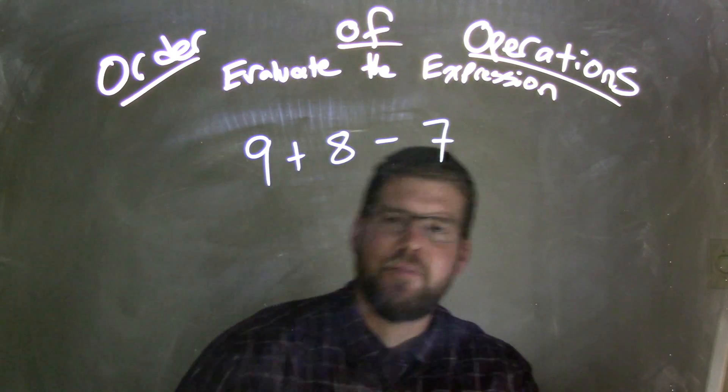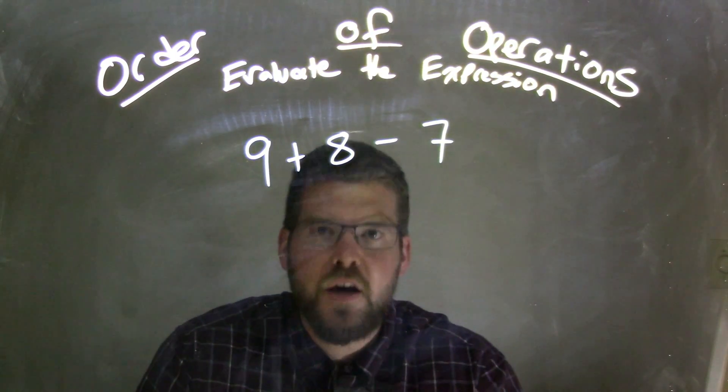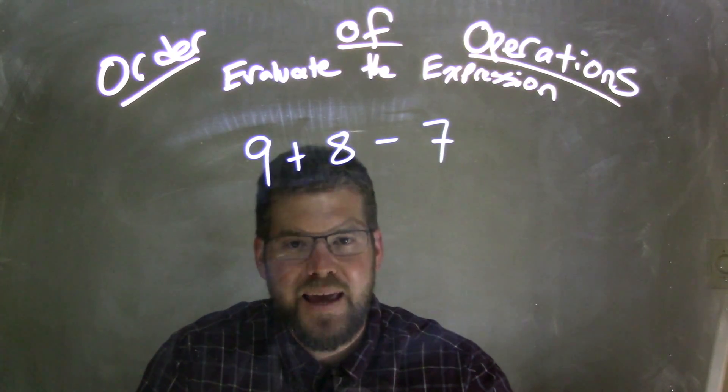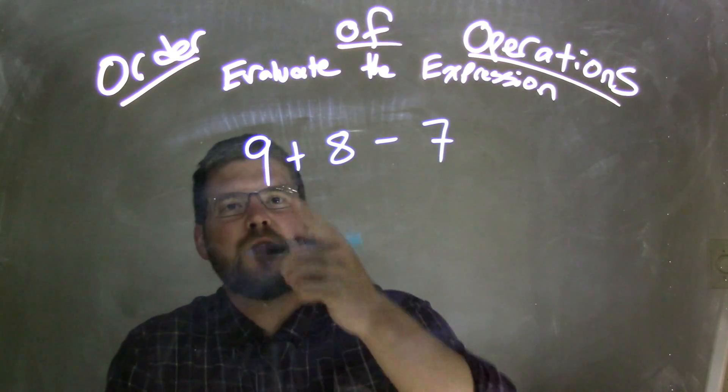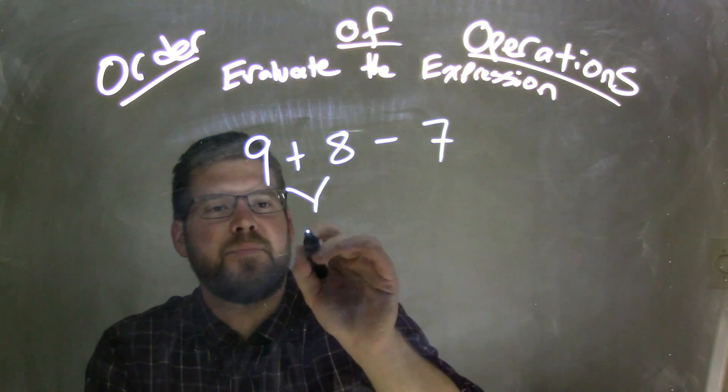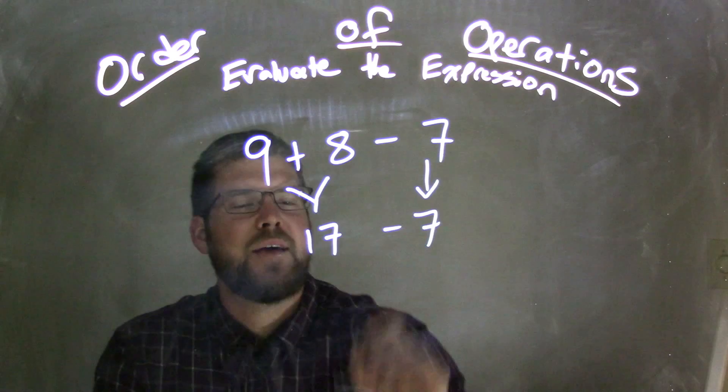So 9 plus 8 minus 7 - we have addition and subtraction, and we're going to read from left to right. Addition and subtraction are on the same level. So 9 plus 8 comes out to be 17, then we subtract the 7 and bring that down.